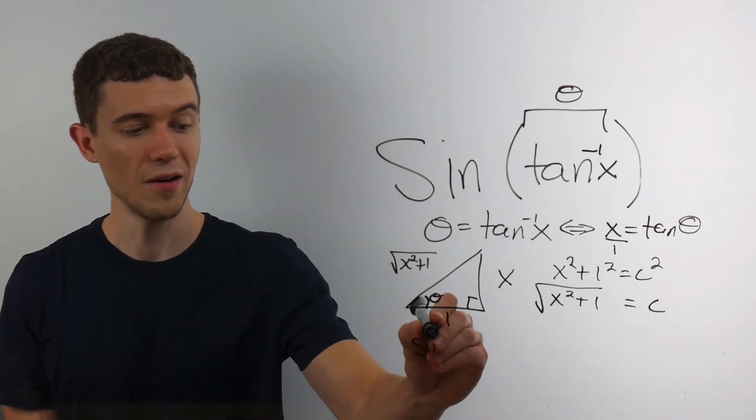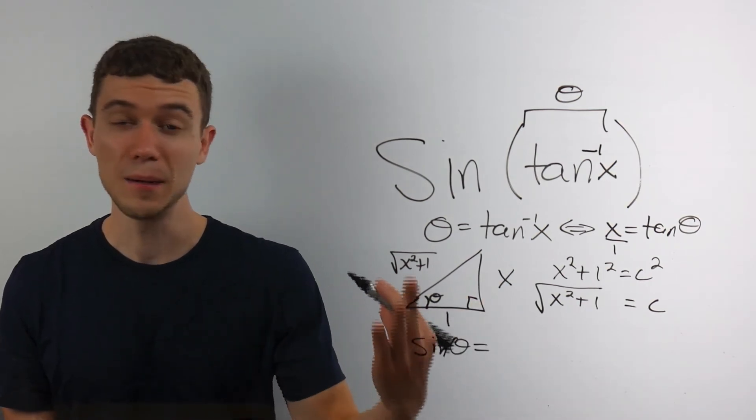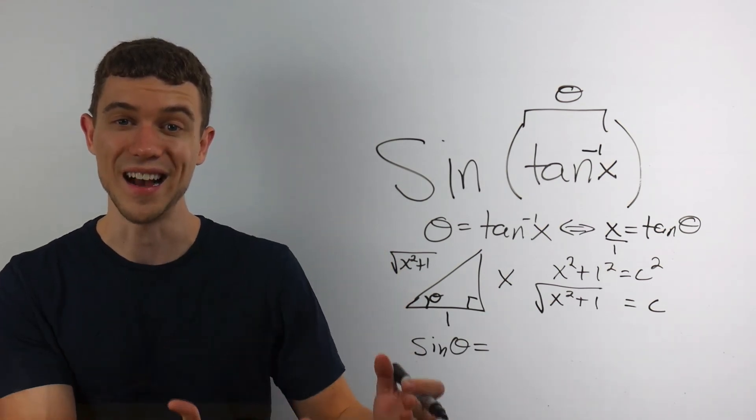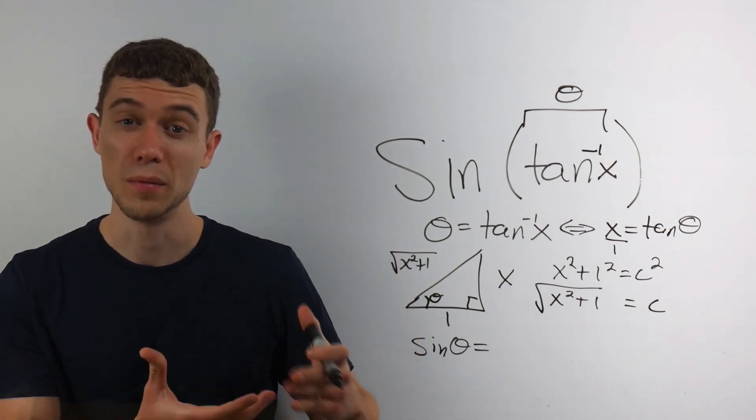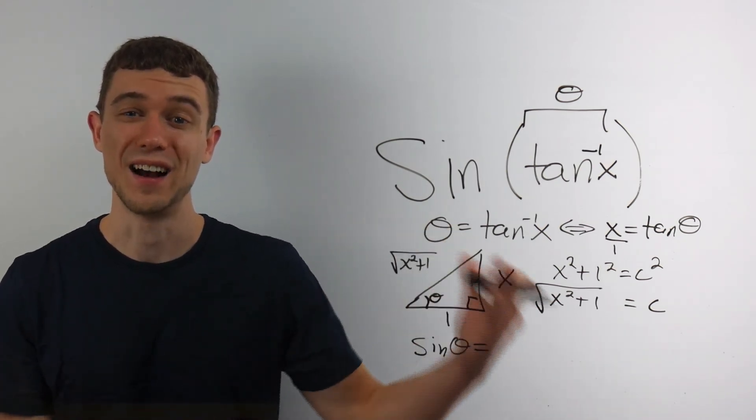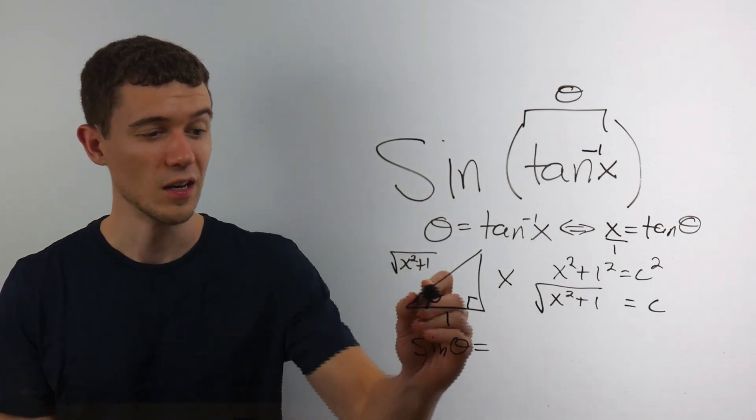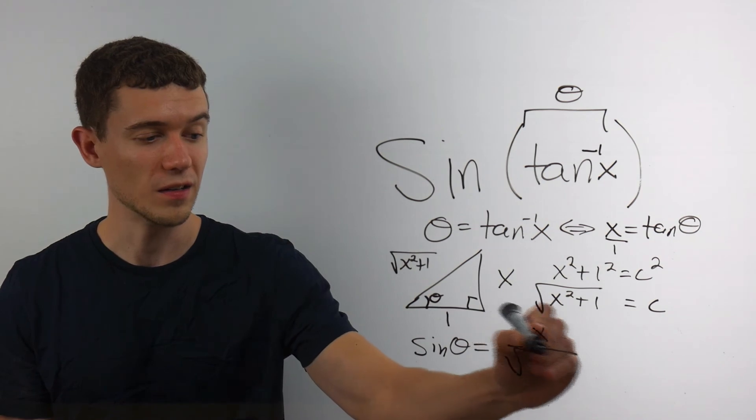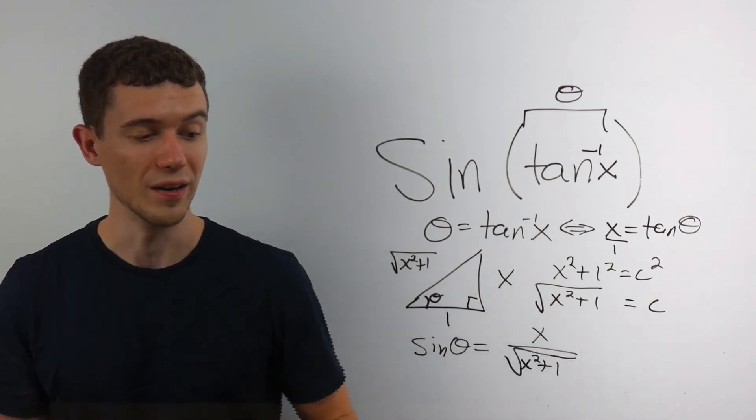So we now have that sine theta is the same sine theta as right here. I can just read off the sine of this triangle. Remember in SOH CAH TOA sine is opposite over hypotenuse. So the opposite is x. And the hypotenuse we found is the square root of x squared plus 1.